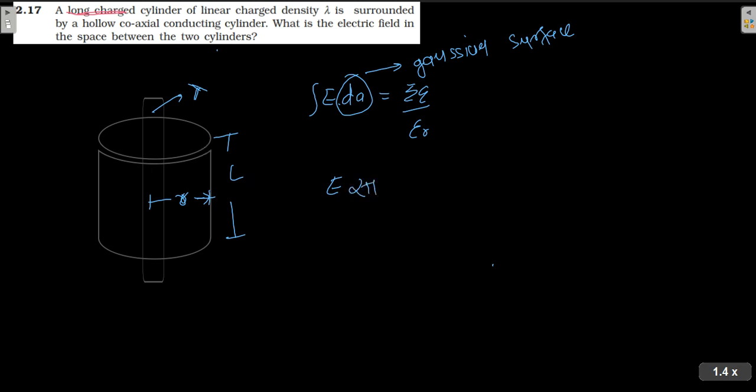So how much is the area? 2 pi r into L. This is L, and the circumference is 2 pi r. It is equal to summation q by epsilon naught.